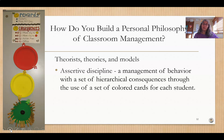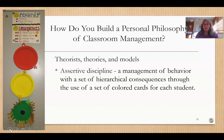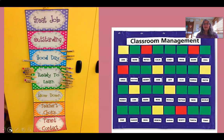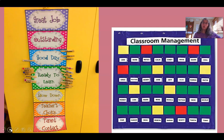If a student's behavior starts to get out of line, they might move their clothespin with their name on it to yellow, indicating a warning that they need to consider changing their behavior. If their behavior continues to be poor, they could get moved up to red where they would have a consequence. There are other variations — some systems have more levels than just red, yellow, and green, and there are a variety of ways you can implement this.